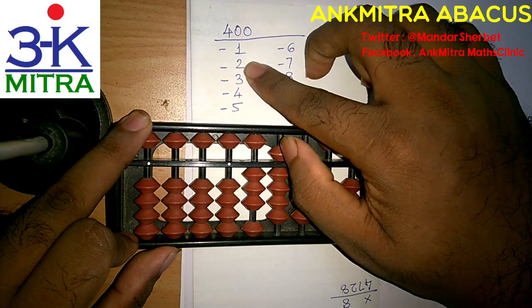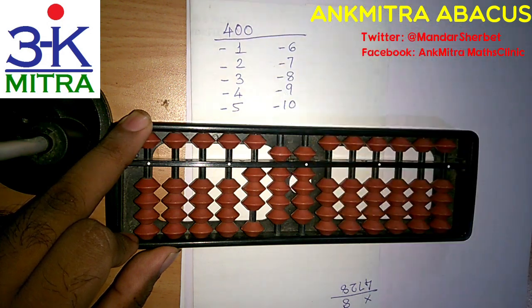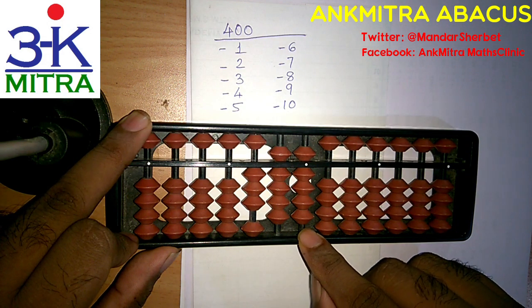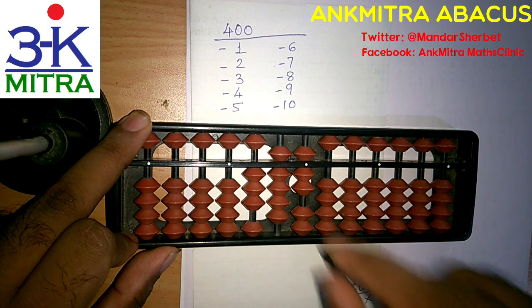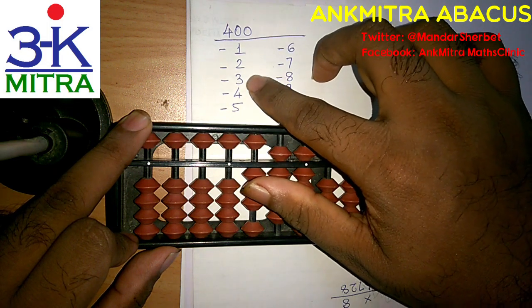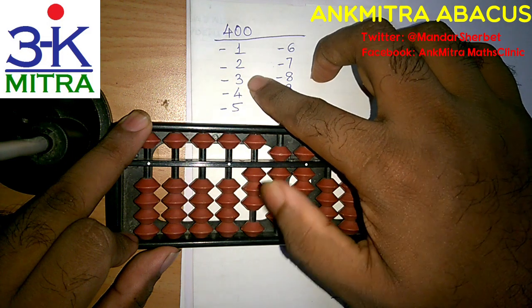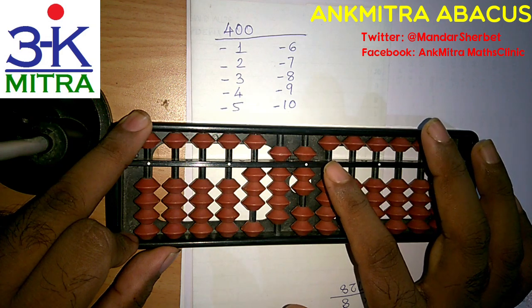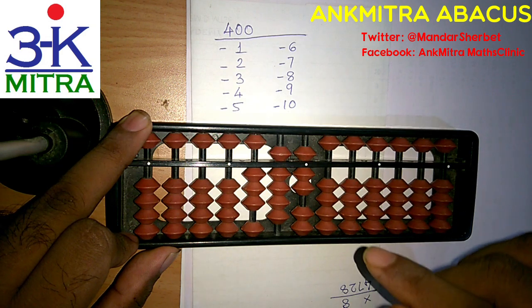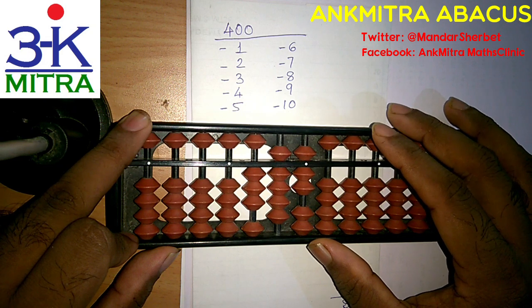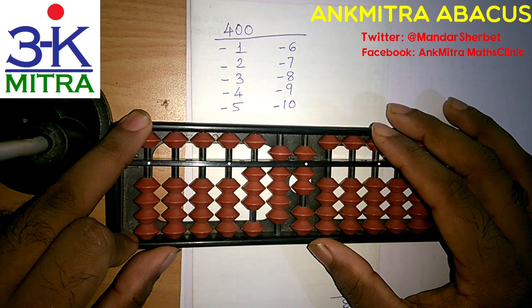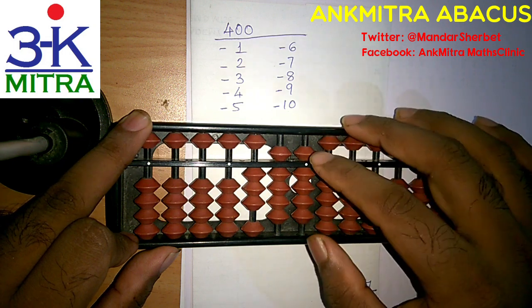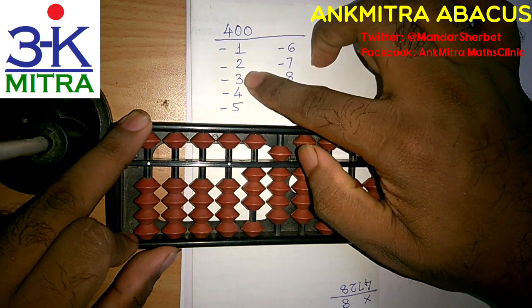Now coming to the second number which is minus 2. I can do it directly — I have 2 bits available to subtract, so I can do minus 2 directly. Now coming to the third number which is minus 3. I need to subtract 3 on the units place. I don't have 3 bits available but I do have 5 available here for subtraction, so I can use the small friend formula of minus 3, which is plus 2 minus 5. So I can do plus 2 minus 5 and finish the subtraction of 3.